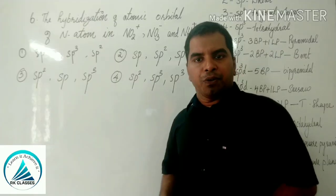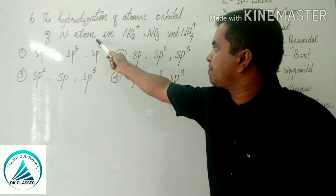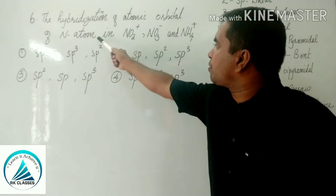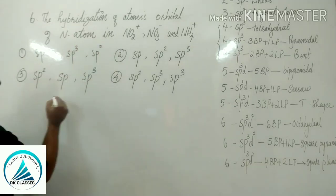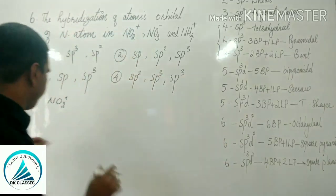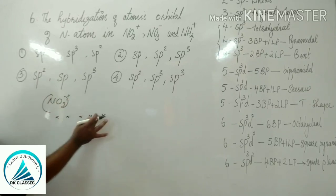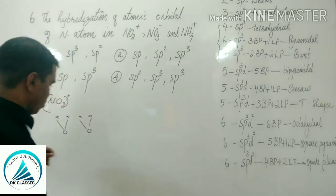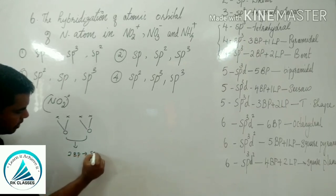Our next and last question: the hybridization of nitrogen in NO2 plus, NO3 minus, and NH4 plus. For NO2 plus, nitrogen has 5 valence electrons. With a positive charge, we remove one — leaving 4. Oxygen is bivalent, so each oxygen uses electrons for bonding. With 2 bond pairs, hybridization is sp.